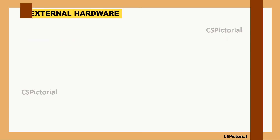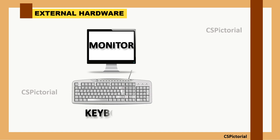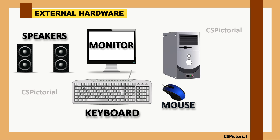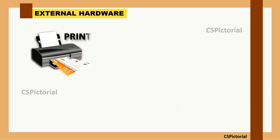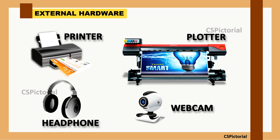Some of the external computer hardware components are: Monitor — the display device; Keyboard — the input device; Mouse — the pointing device; Speakers; CPU cabinet (remember, the CPU cabinet is different from the CPU chip — please check our previous video about the CPU for more understanding); Printer; Plotter; Headphones; Webcam; and many more.